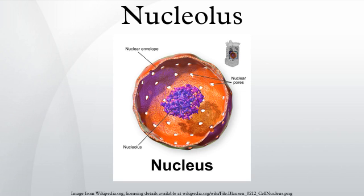In 1966, Max Birnstiel and colleagues showed via hybridization experiments that genes within nucleoli code for ribosomal RNA structure. Three major components of the nucleolus are recognized: the fibrillar center, the dense fibrillar component, and the granular component.